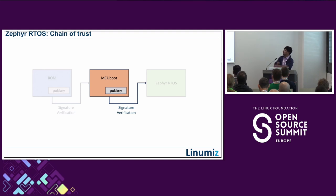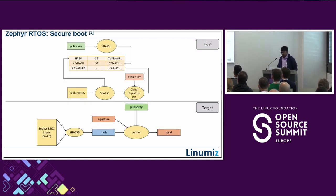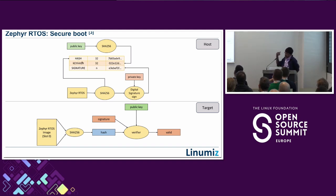ROM-to-MCU-boot secure booting can be done with multiple SoC vendors — Espressif does a similar scenario using public/private key infrastructure, though fuse keys and offsets vary. The next stage in the chain of trust is MCU boot itself, which boots the next-stage OS (Zephyr). You need a private/public key combination: take the Zephyr binary, compute the hash, and store it in the TLV section appended with the image. The hash is signed using the private key, and the signature is also stored in the TLV section.